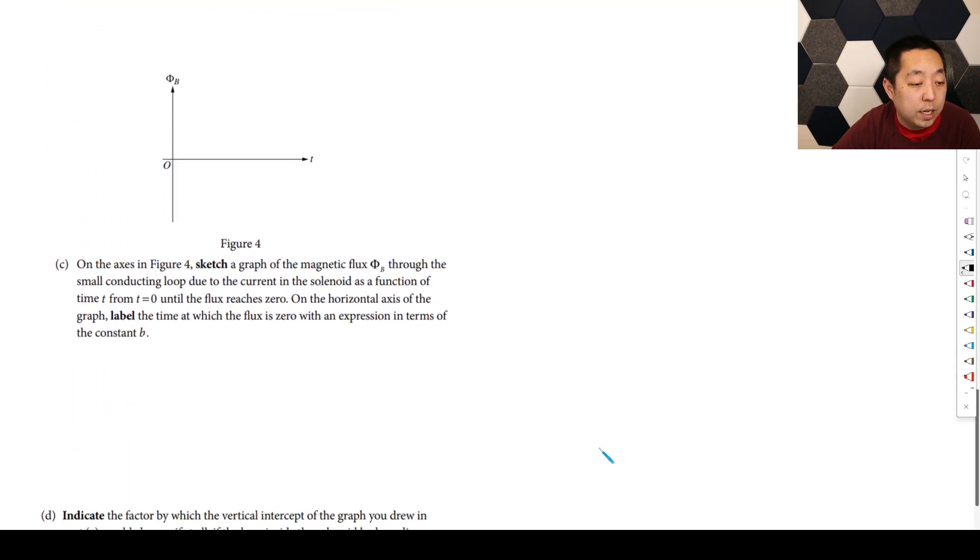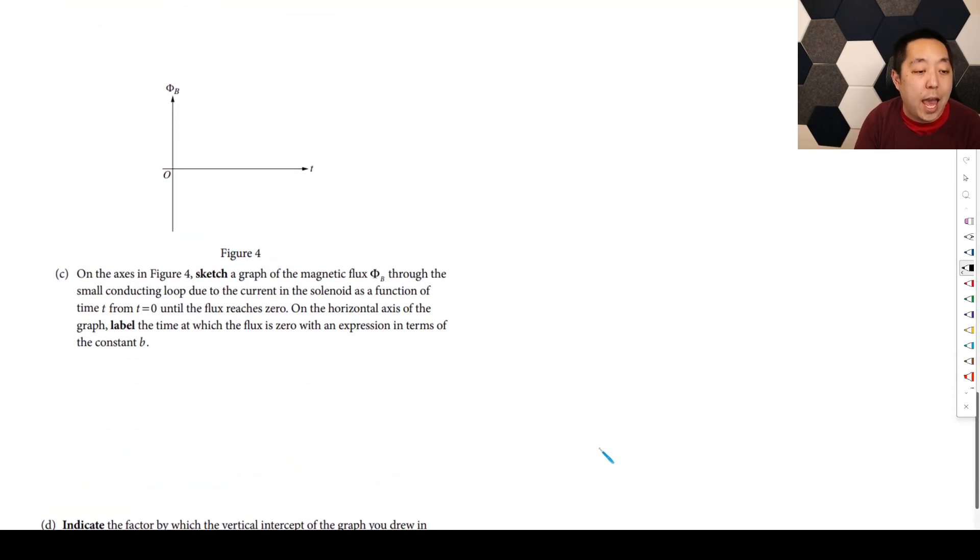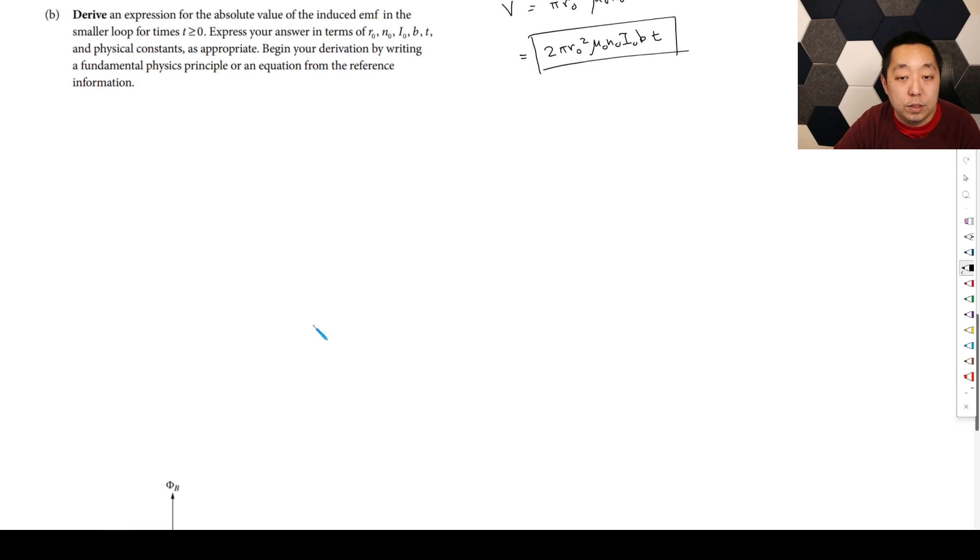Let's go to the next part. Now we have to do the graph sketching. On the axes in figure four, sketch the graph of the magnetic flux through the small connecting loop due to the current in the solenoid as a function of time from t equals zero until the flux reaches zero. On the horizontal axis, label the time at which the flux is zero with an expression in terms of the constant B.